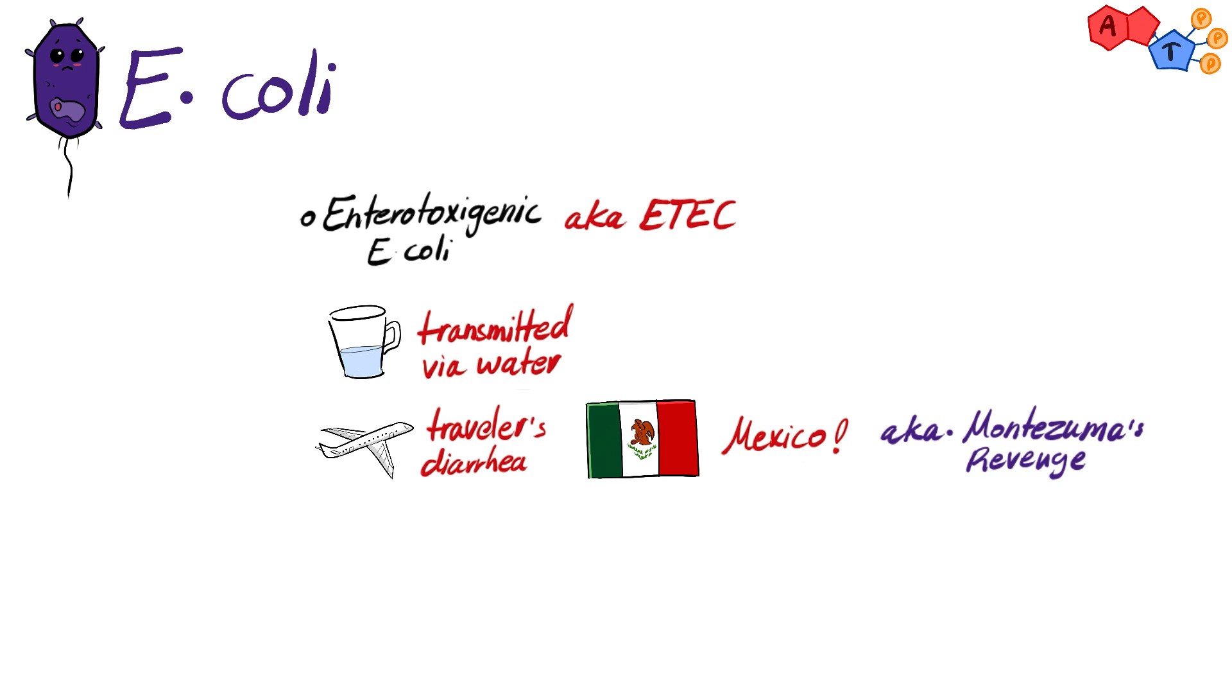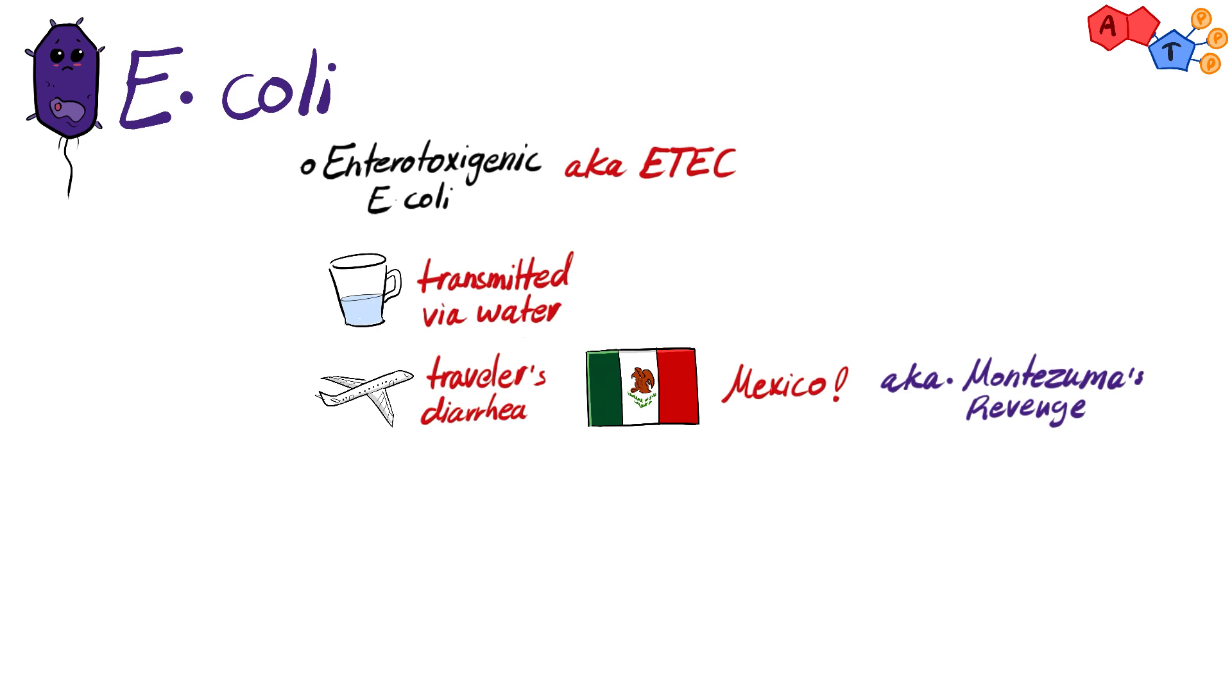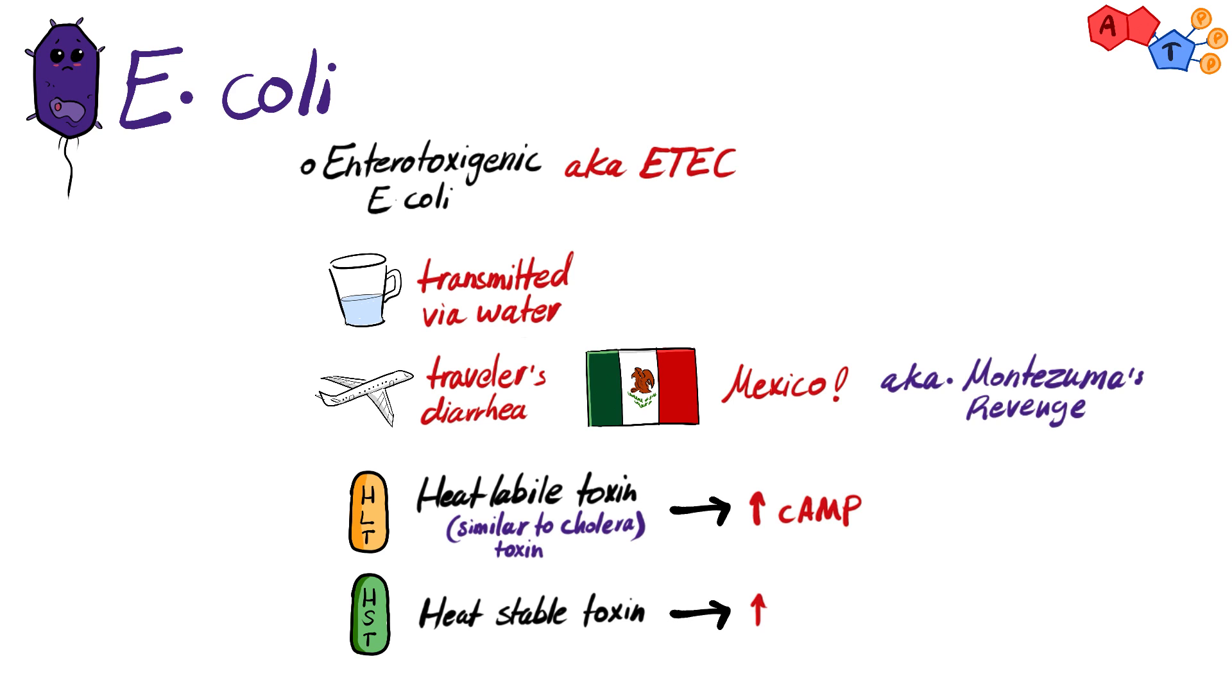Fun fact, Montezuma was an Aztec emperor back in the 16th century who used to rule Mexico. ETEC produces heat labile toxin and heat stable toxin. The heat labile toxin, which is similar to cholera toxin, increases cyclic AMP, whereas the heat stable toxin increases cyclic GMP.